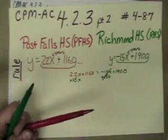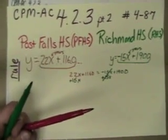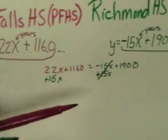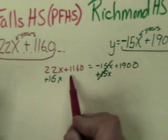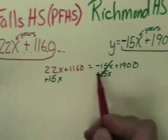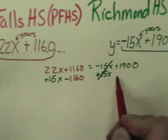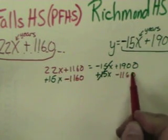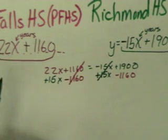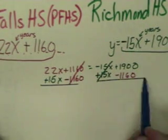And that's going to be 0 because negative 15 and positive 15 is 0. And then I'm going to move this 1160 over to the other side. The opposite of adding is subtracting. And that, of course, is 0.